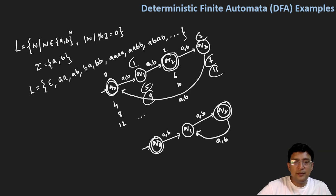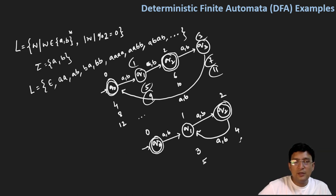Let's count here: zero, one, two — then with length three you move to q1, length four you move to q2, length five you move to q1, and length six you move to q2. So two-length, four-length, six-length, and eight-length strings are accepted by q2, while the zero-length string is accepted by q0.